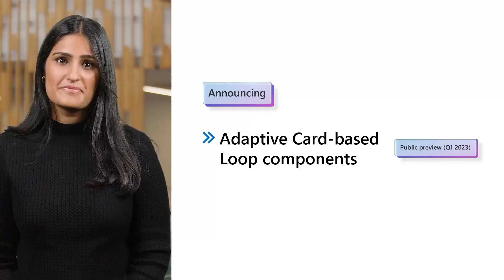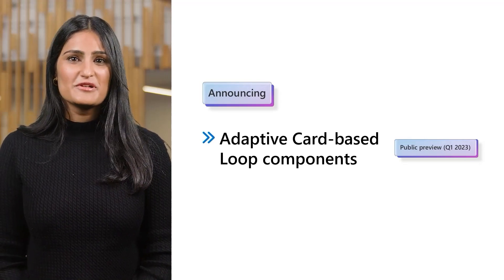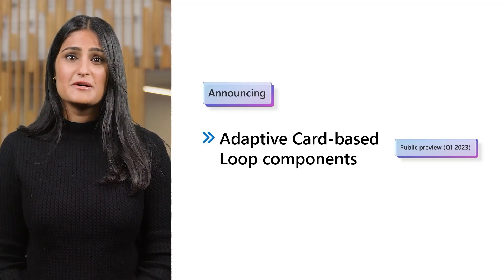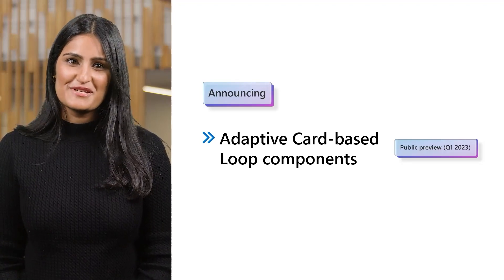If you're an SAP S4 HANA customer, these new features are available through SAP's Early Adopter program. We're working with several partners in the developer private preview to enable a wide range of scenarios with Adaptive Card-based loop components. We're pleased to announce that these scenarios will be available to end users in a public preview beginning in the first quarter of 2023.